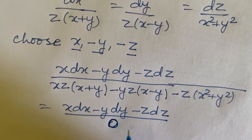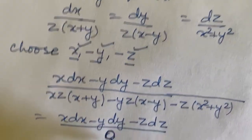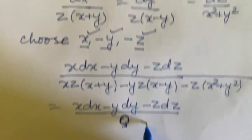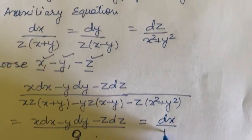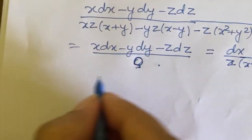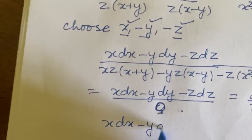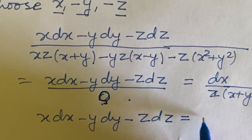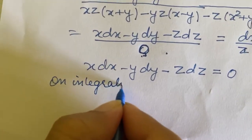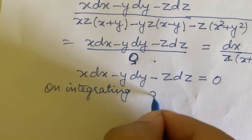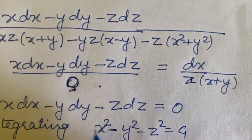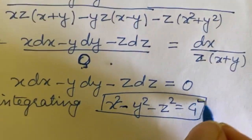Our choice of multipliers made the denominator 0. Once the denominator is 0, we may equate it to any of the fractions such as dx/(z(x+y)). So our equation becomes x dx − y dy − z dz = 0. On integrating we get x² − y² − z² = c₁, where c₁ is an arbitrary constant.